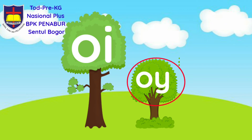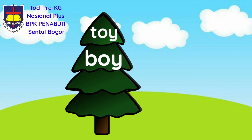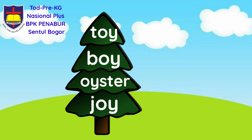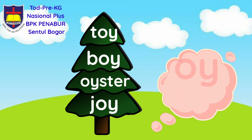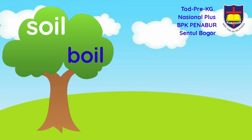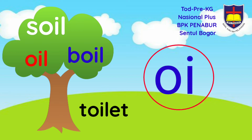But the sound is the same — the sound is 'oi'. Now let's try to read the words. Toy, boy, oyster, joy. This is using O and Y. How about this word? Soil, boil, oil, toilet. This is using O and I.